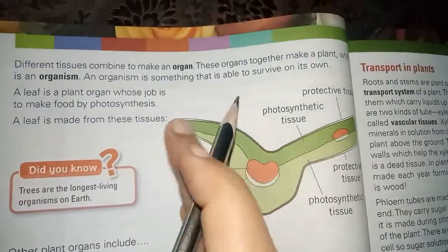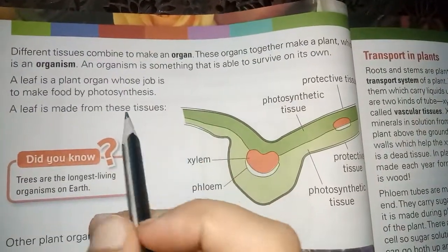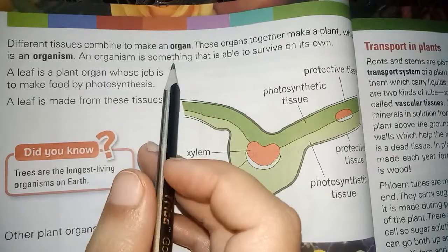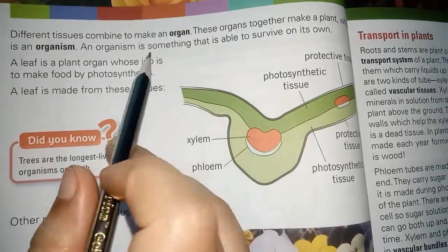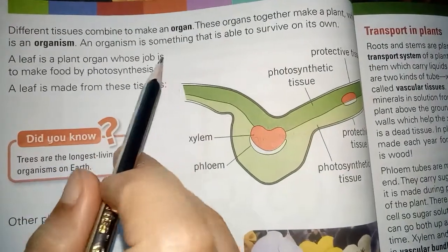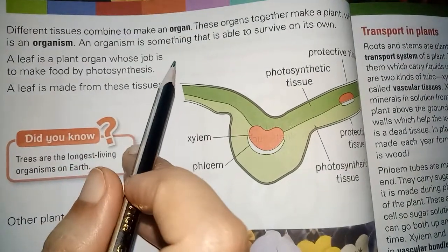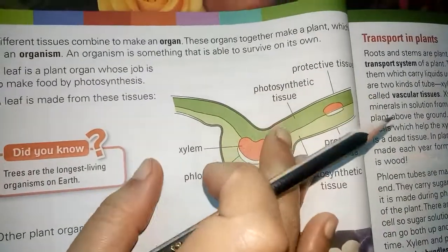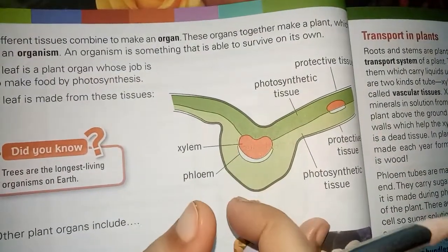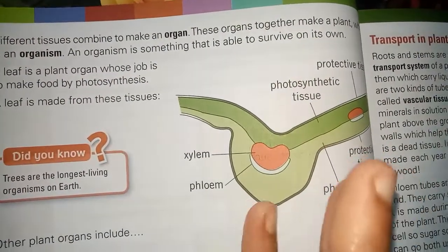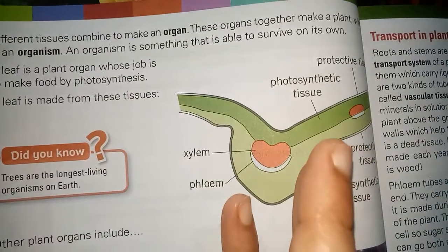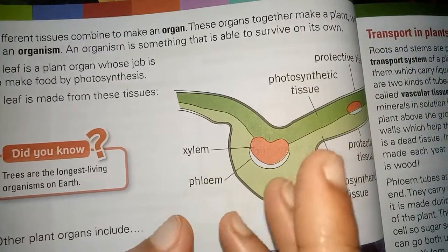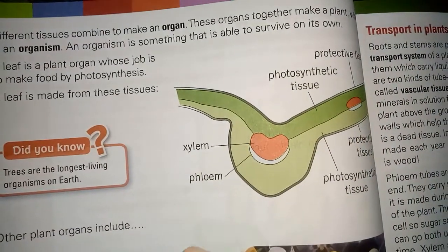Continuing from that, what is an organ? Different tissues combined together make an organ. What are the organs in the plant? The stem is an organ, the roots are an organ, and the leaves are an organ.